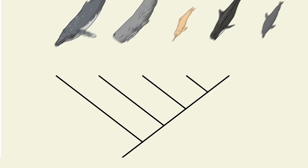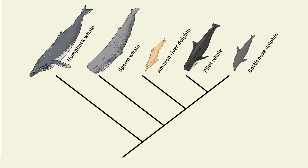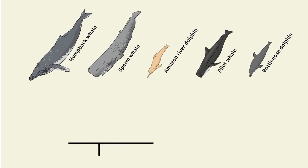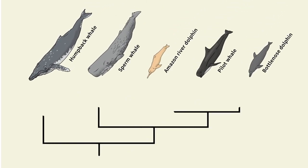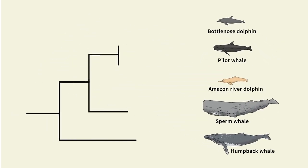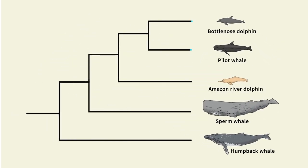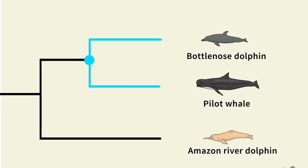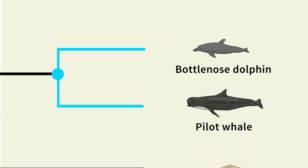Tree diagrams can be drawn in many different ways. But no matter how they're drawn, they follow the same rules of organization. In general, organisms that have more characteristics in common share a more recent common ancestor.